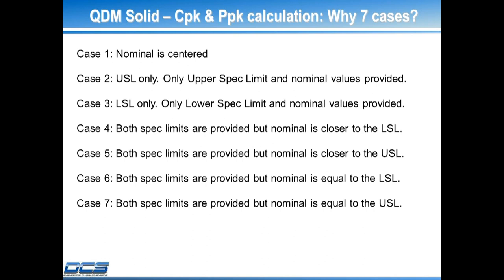On this slide, we've got them defined here for you. You've got the nominal centered as before — case one. Case two is when you've got an upper spec limit only. Case three is when you have a lower spec limit only. Case four, you have both spec limits but your nominal is a bit closer to the LSL. Likewise, case five has both spec limits but the nominal is a bit closer to the USL. Case six is both spec limits provided, however the nominal is equal to the LSL — this is what I equated to true position. Sometimes a diameter size would be closer to LSL or USL, like in case six or seven.